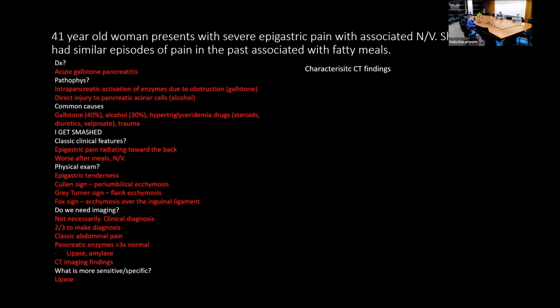Characteristic CT findings of pancreatitis include parenchymal edema, fat stranding, and peripancreatic free fluid. Necrotizing pancreatitis can also be seen. General treatment options include aggressive IV fluids, pain control — which is critical as patients are in severe pain — and managing the underlying cause. Cholecystectomy is indicated for gallstone pancreatitis.